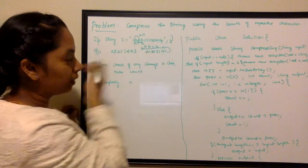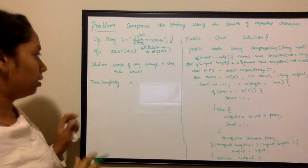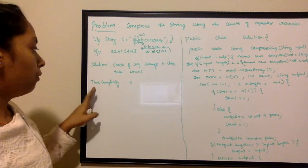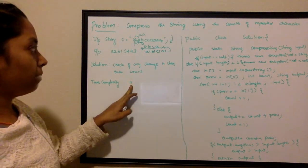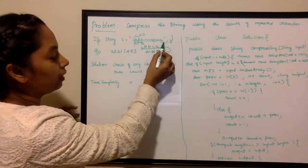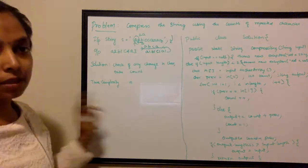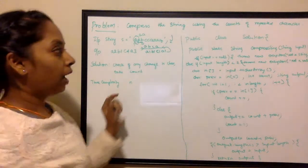The time complexity would be O(n) because I'm iterating from the first character till the end. This would be the best solution we can think of.